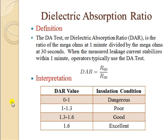The first time resistance test is called the dielectric absorption ratio, or DAR. What you do here is take insulation resistance for 60 seconds and for 30 seconds, and take the ratio. DAR equals insulation resistance at 60 seconds divided by insulation resistance at 30 seconds — R60/R30. Some equipment nowadays give the direct value of DAR on its digital screen. The interpretation per IEEE standard: DAR 0 to 1 is dangerous, 1 to 1.3 is poor, above 1.3 starts to be considered good, and 1.6 is an excellent value.